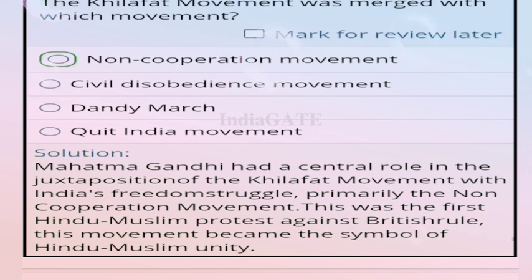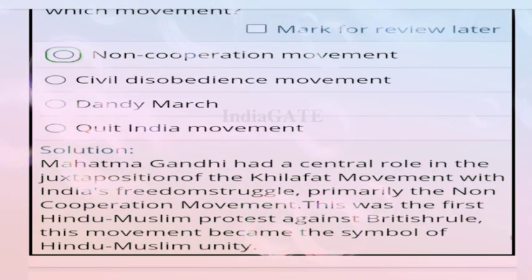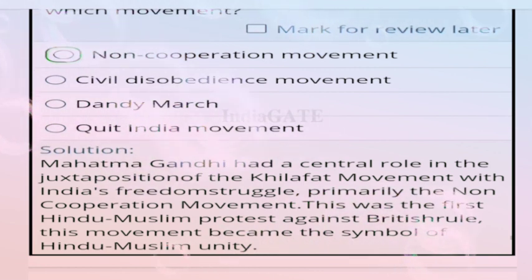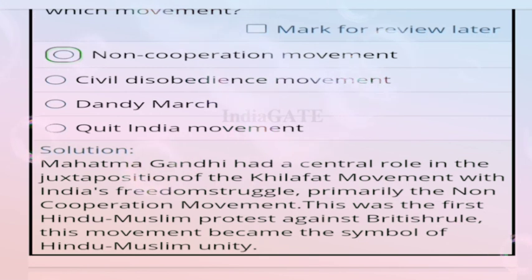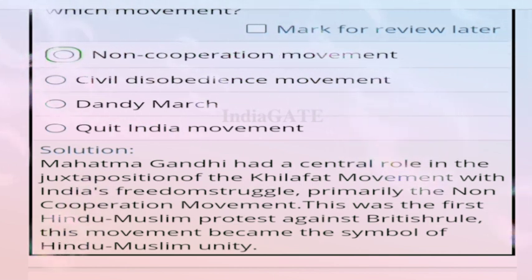Question 90: the Khilafat movement was merged with which movement? Correct answer is option A, Non-Cooperation Movement. Mahatma Gandhi had a central role in joining the Khilafat movement with India's freedom struggle through the Non-Cooperation Movement. This was the first Hindu-Muslim protest against British rule and became a symbol of Hindu-Muslim unity.